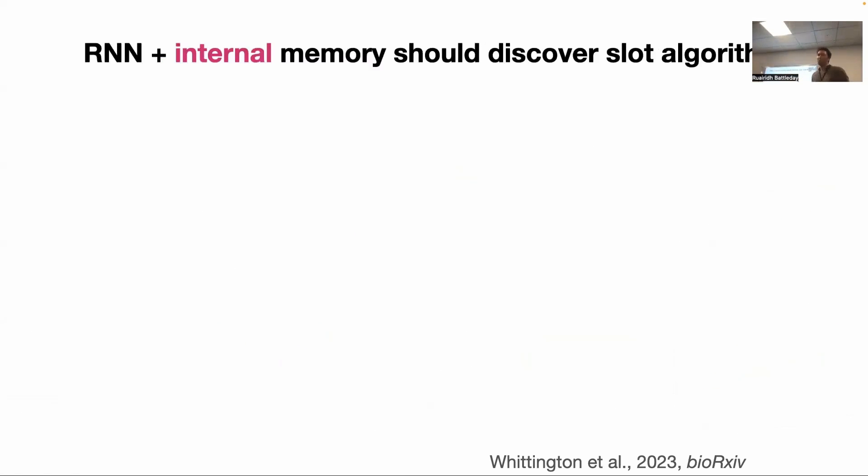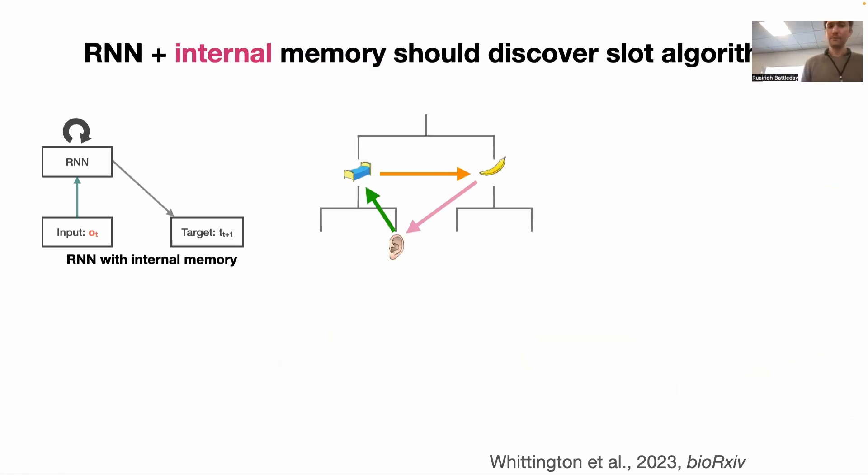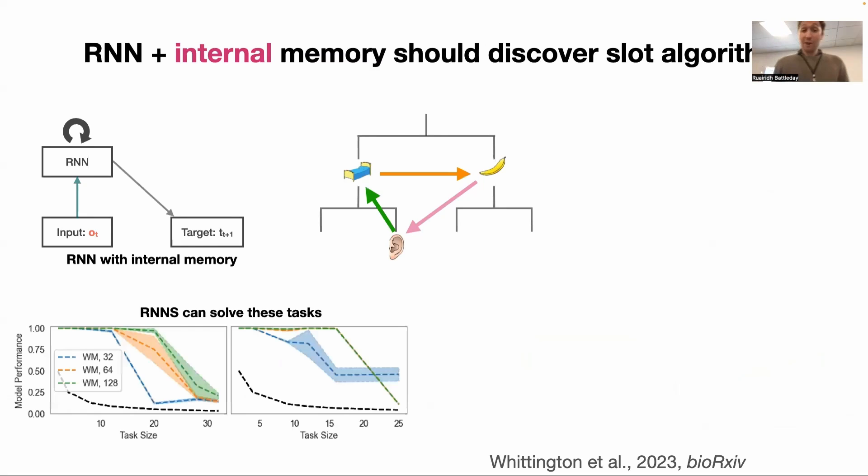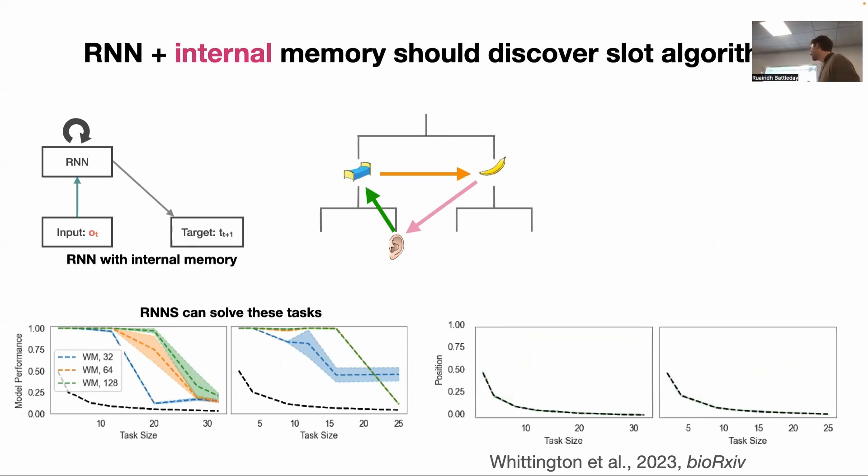However, what happens in this other situation? This one where we just have an RNN and the internal memory, just an RNN. Well, first off, it also solves the tasks. It doesn't do quite as well. It doesn't scale to the bigger task sizes, but it does solve the tasks. Second off, it does not use a position representation. If you try to decode position, you're at chance. It does not use position. It does something different.